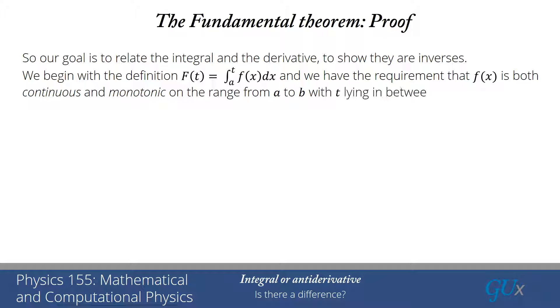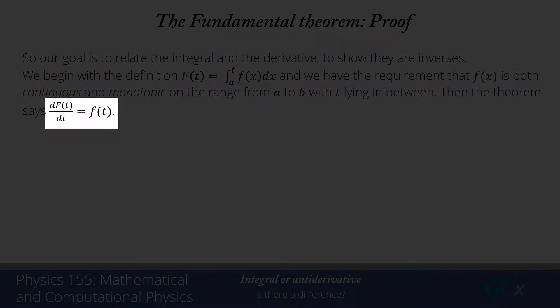It's the integral from a to t of f(x)dx. And we make the requirement that f(x) is both continuous and monotonic on the range from a to b, with t being some number that lies inside that interval of a to b. Then the fundamental theorem of calculus says the derivative of big F(t) with respect to t is equal to little f(t).